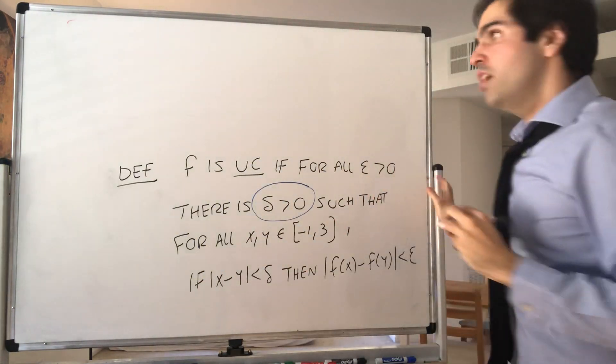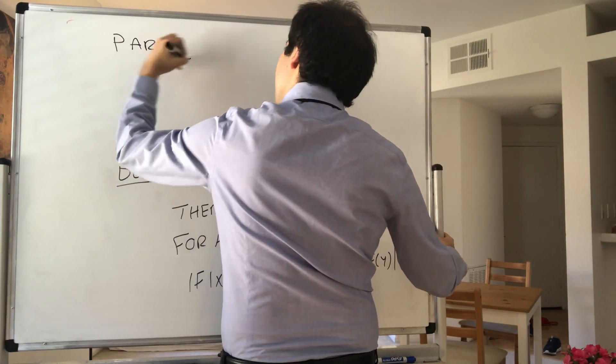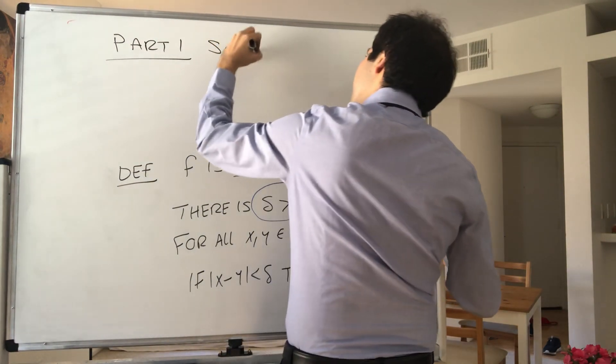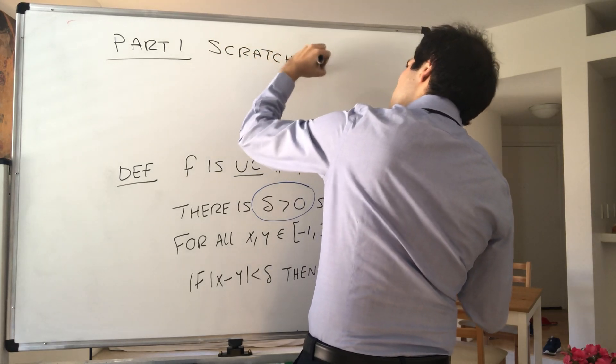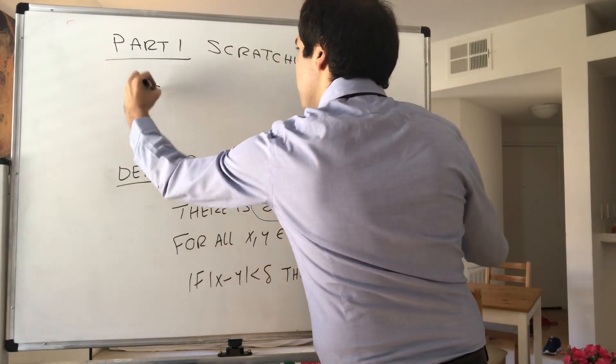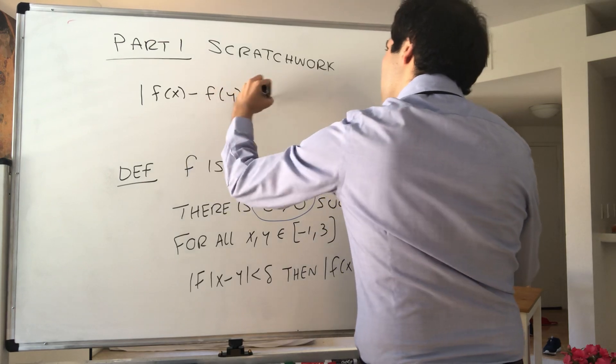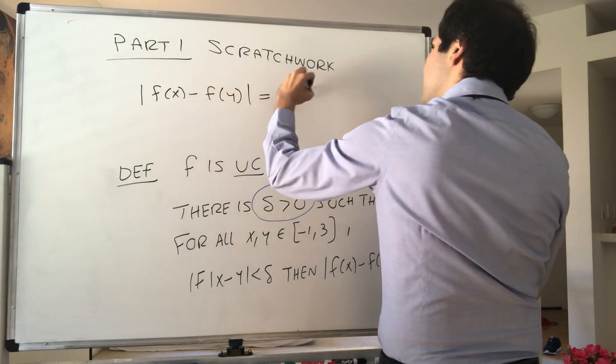So part one, scratch work. So let's work with |f(x) - f(y)|. Well, this is |x² - y²|.